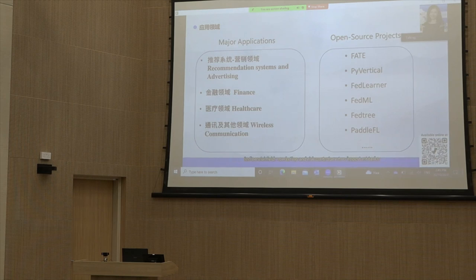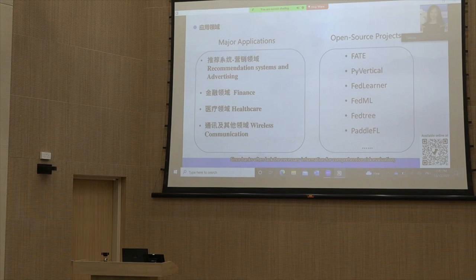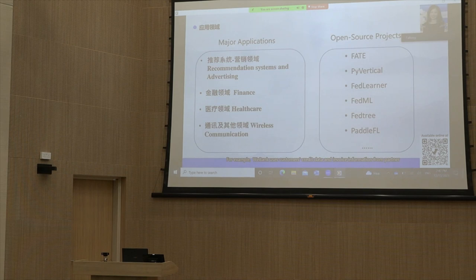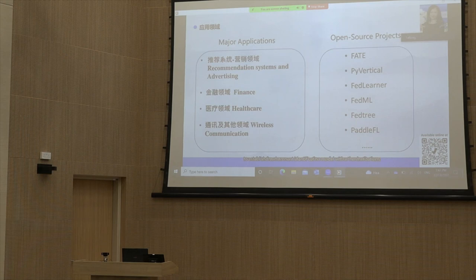In the financial field, marketing and risk control are two important tasks. Since banks often lack necessary information for comprehensive risk evaluation, they resort to external data sources. WeBank uses customers' credit data and invoice information from partner companies to jointly build a risk control model for small and micro enterprises. Industrial and Commercial Bank of China used vertical federated learning to establish a fraud account identification model with other institutions.